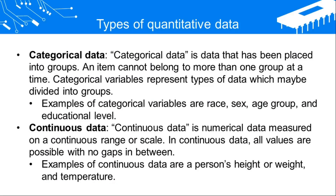The types of quantitative data are categorical data and continuous data. Categorical data can be divided into different groups or categories — the data is divided by variables based on different groups. Continuous data can be measured on a continuous range or scale, where all values are possible with no gaps in between.